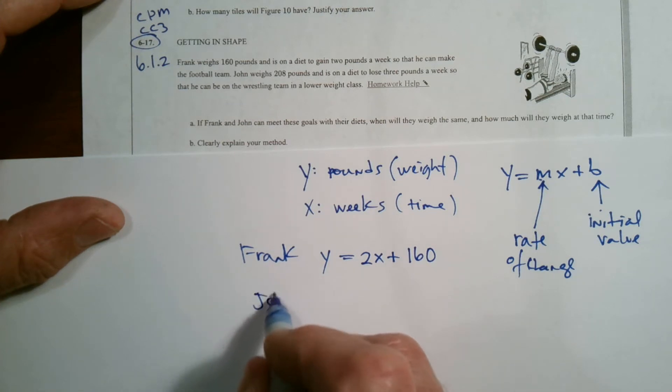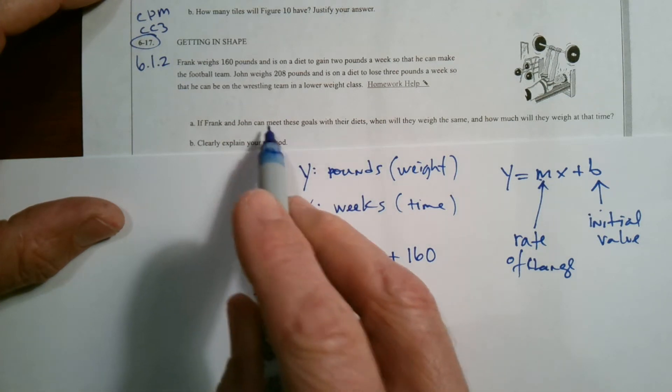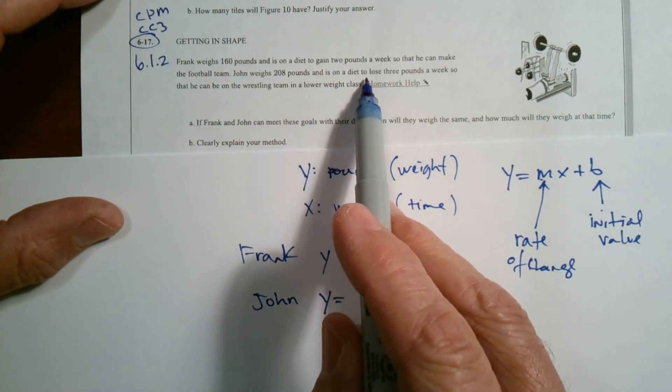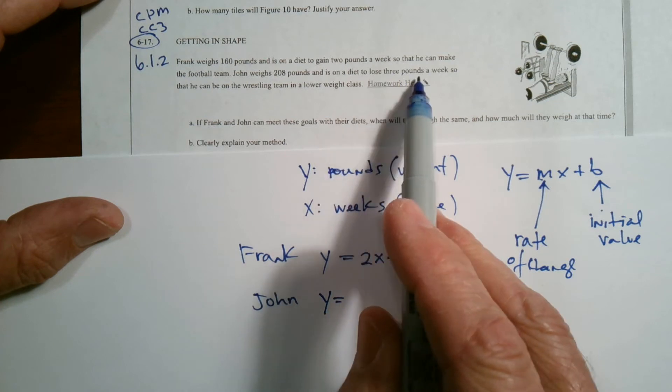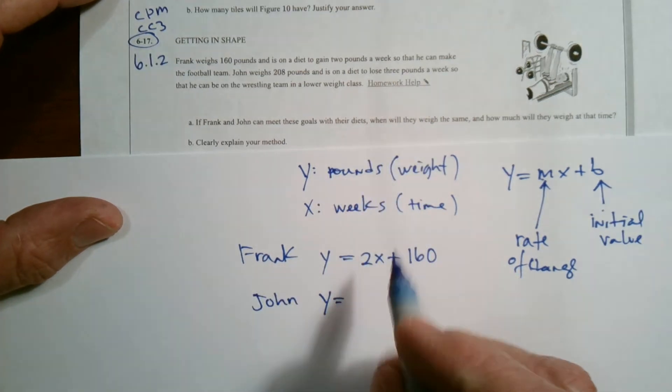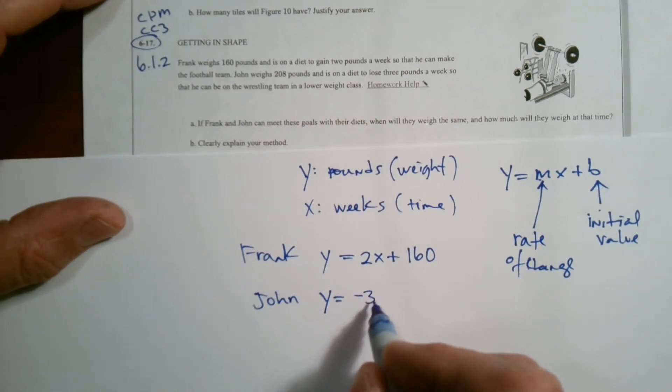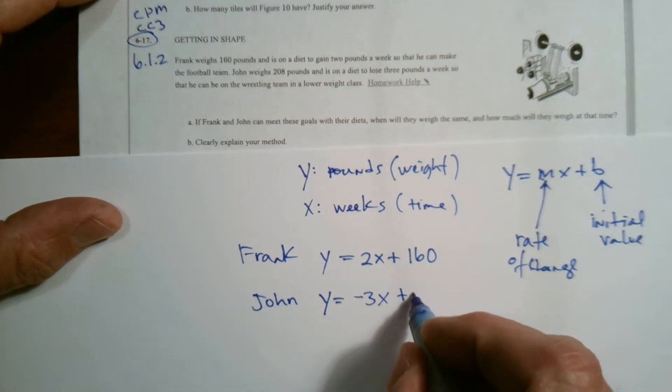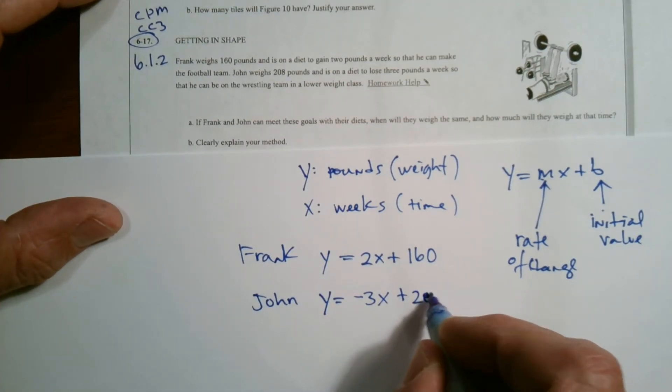John, we know John, his weight is going to be, he's losing, losing three pounds a week, right? So that means it's negative three is his rate, losing negative three per week plus the initial weight of 208.